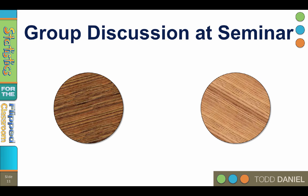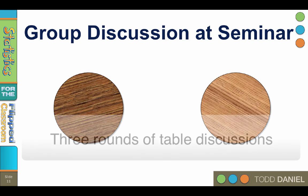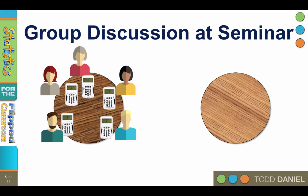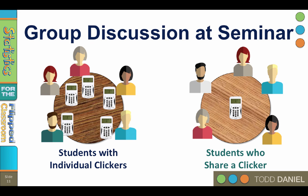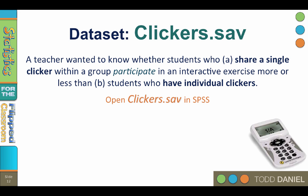Here is the research design: students were seated at tables during a seminar. Three times during the seminar, students participated in a group discussion and then voted on an answer using their clicker. At some tables, everyone had their own individual clicker; at other tables, the table shared a single clicker so the group had to agree on a group response. One research question was whether students who shared a single clicker participated in an active exercise more or less than those using individual clickers — would sharing a clicker change the level of student participation?